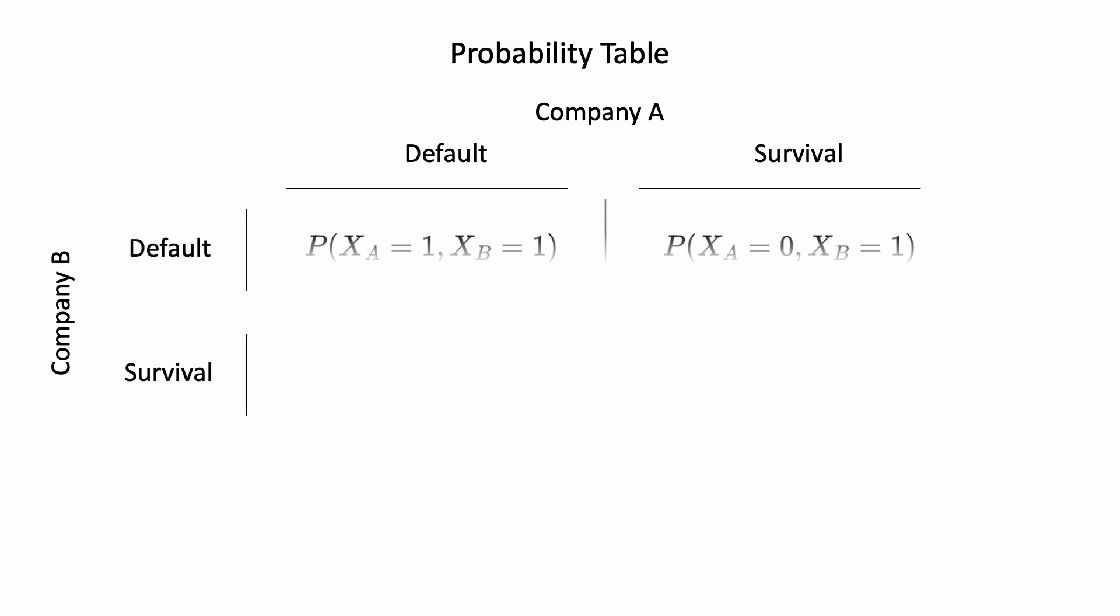The joint default probability is the probability when both default. This is a good opportunity for us to review some of the basics of probability theory. Looking at the following two-way probability table, we have four possible combined outcomes: when both default, when one defaults and the other survives, and when both survive.